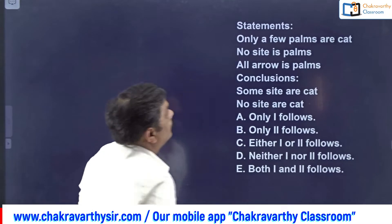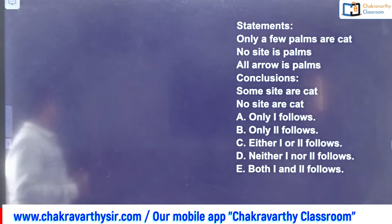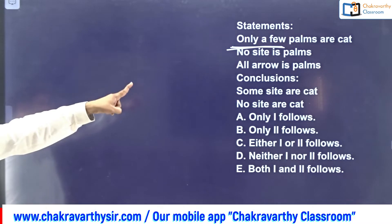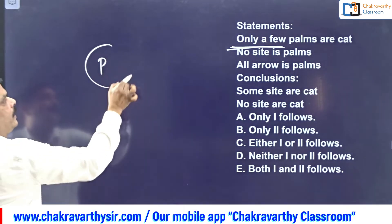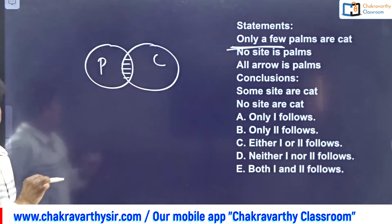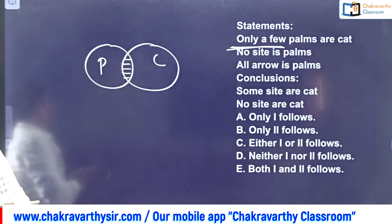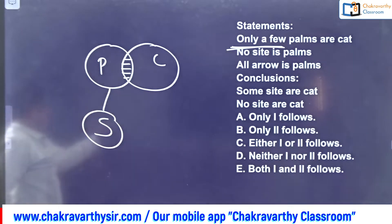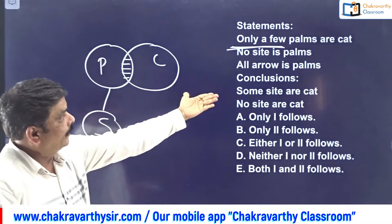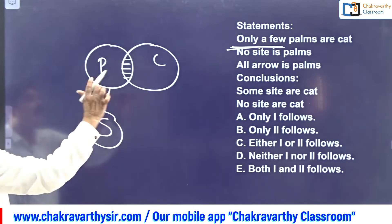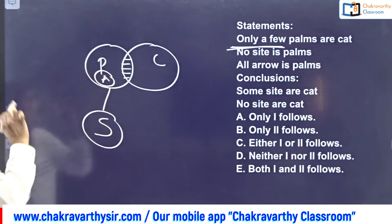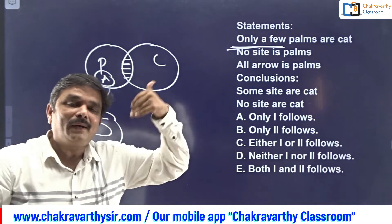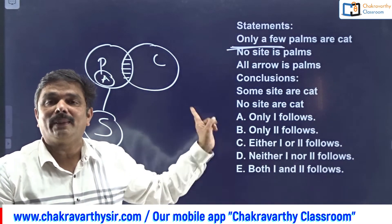Go for question three. Pause the video and try by yourself. The 'only' concept is there again: only a few palms are cats - only that overlapping part. Next: No site is palms - there is a constraint between P and S. Then: All arrow is palms, meaning arrow should be inside palms. But remember, in the basic diagram C and A should not merge; in the alternate diagram, if required, both can merge.